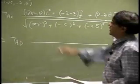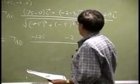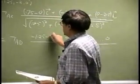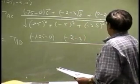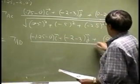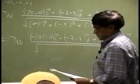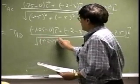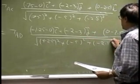For TAD, you're looking at vector AD. The coordinates give you negative 1.25, negative 2, and 0, and you subtract A to get 0, negative 3, negative 2.5, expressed as i plus j plus k components. Then take the square root of negative 1.25 squared plus negative 5 squared plus negative 2.5 squared.